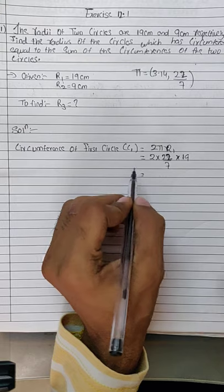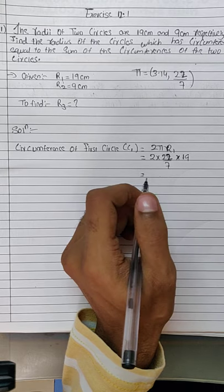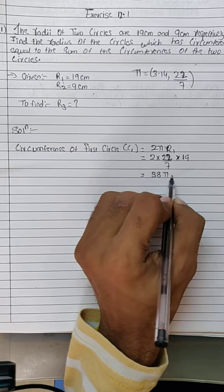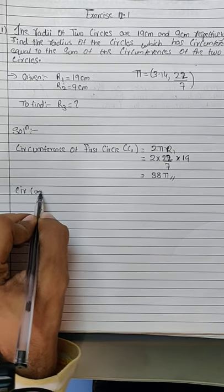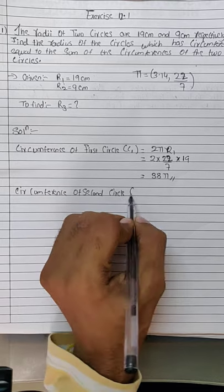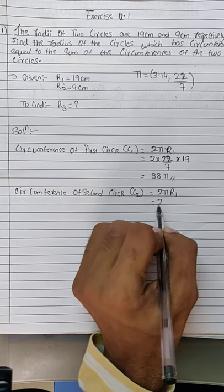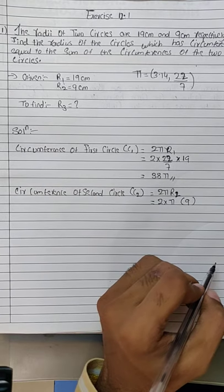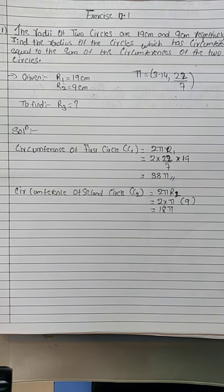Since pi will be common throughout, we keep it as pi. So C1 = 38π. Now for C2 = 2πr2 = 2 × π × 9. r2 is 9 cm, so C2 = 18π.